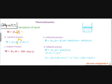The next process is isobaric, where pressure remains constant. Starting with W = −∫P_ext dV, since pressure is constant it comes outside the integral, leaving only ∫dV inside. The integral of dV is ΔV, which is final volume minus initial volume. So the formula for work in an isobaric process is simply W = −P_ext (V_f − V_i), that is, pressure times the change in volume, with the pressure remaining constant throughout.